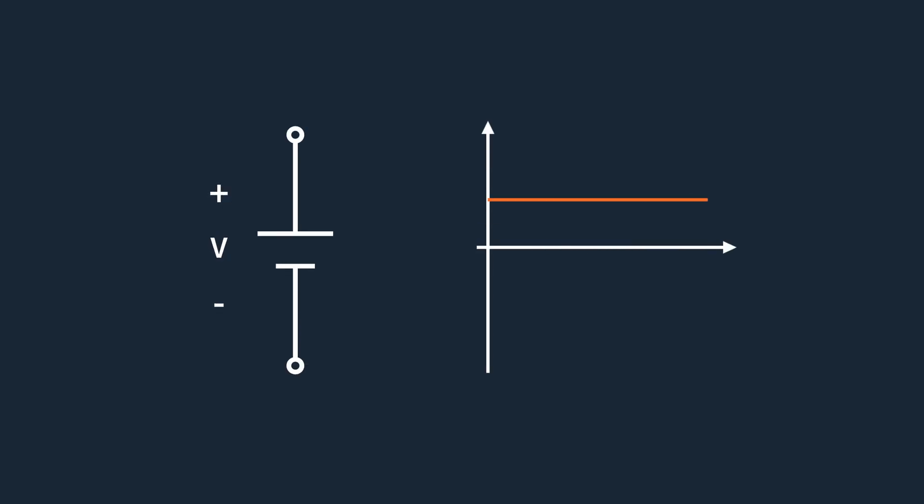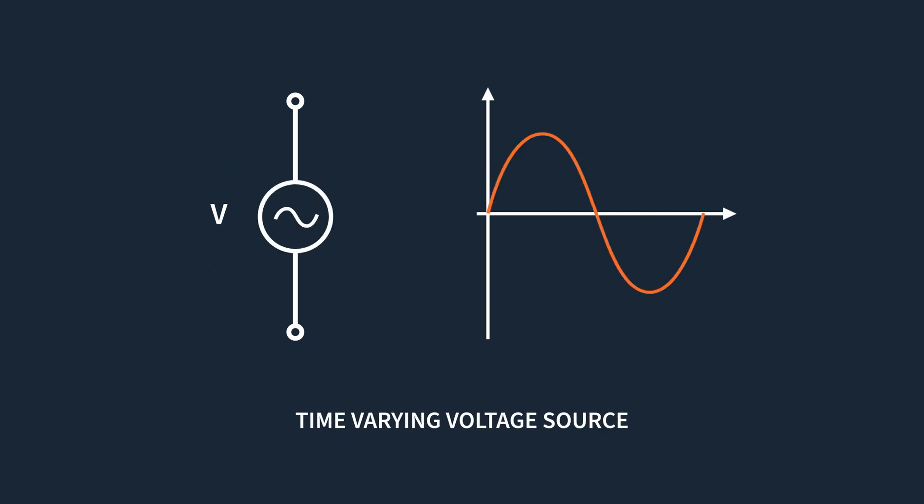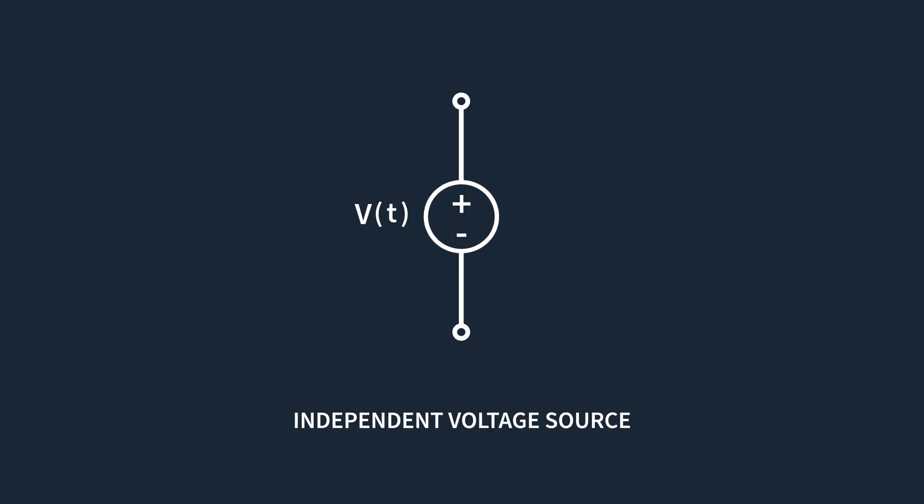Independent voltage sources, as the name suggests, are circuit elements that maintain a specified voltage across their terminals. They can provide either a constant or time-varying voltage. In a circuit diagram, a constant voltage source looks like this, whereas for time-varying voltages, a circle with a sine wave denotes an alternating source, often producing a sinusoidal waveform. This symbol represents all independent voltage sources and is the go-to symbol simply because it's more generic. These symbols help identify the voltage type being supplied, indicating its polarity without the need for assumptions. However, the current direction isn't specified here and must be determined through circuit analysis or assumed according to the passive sign convention.